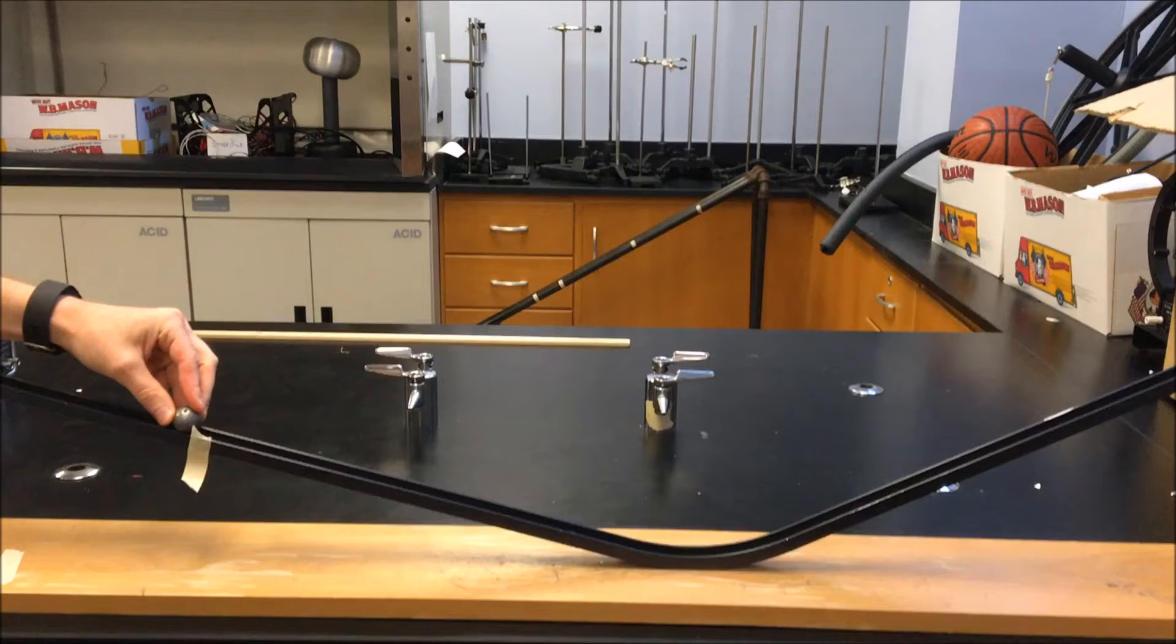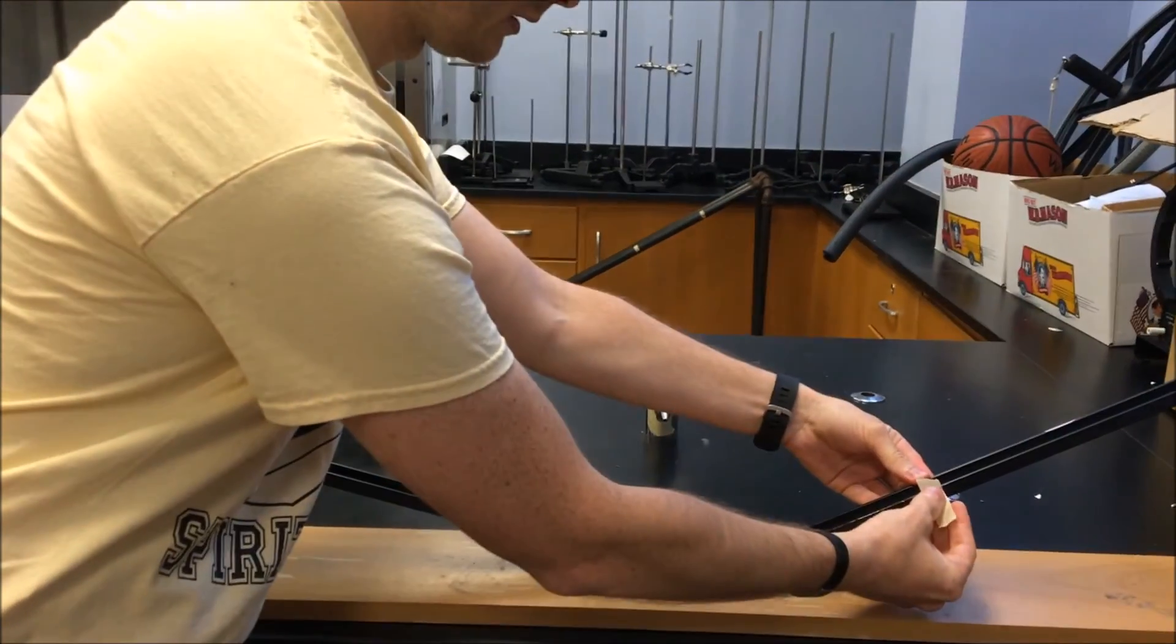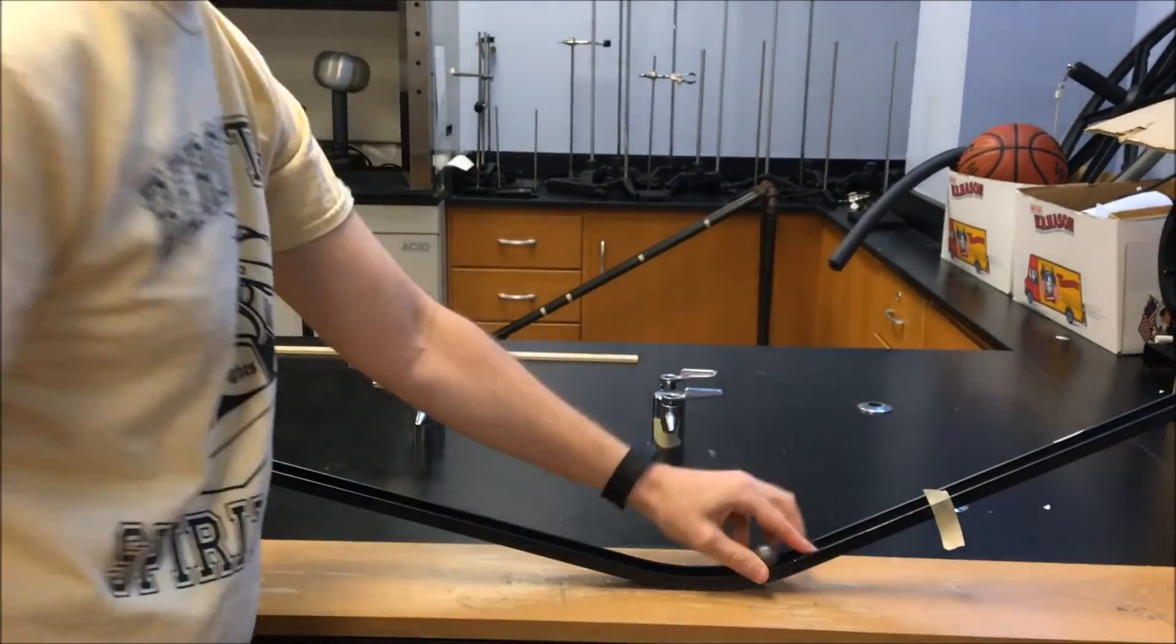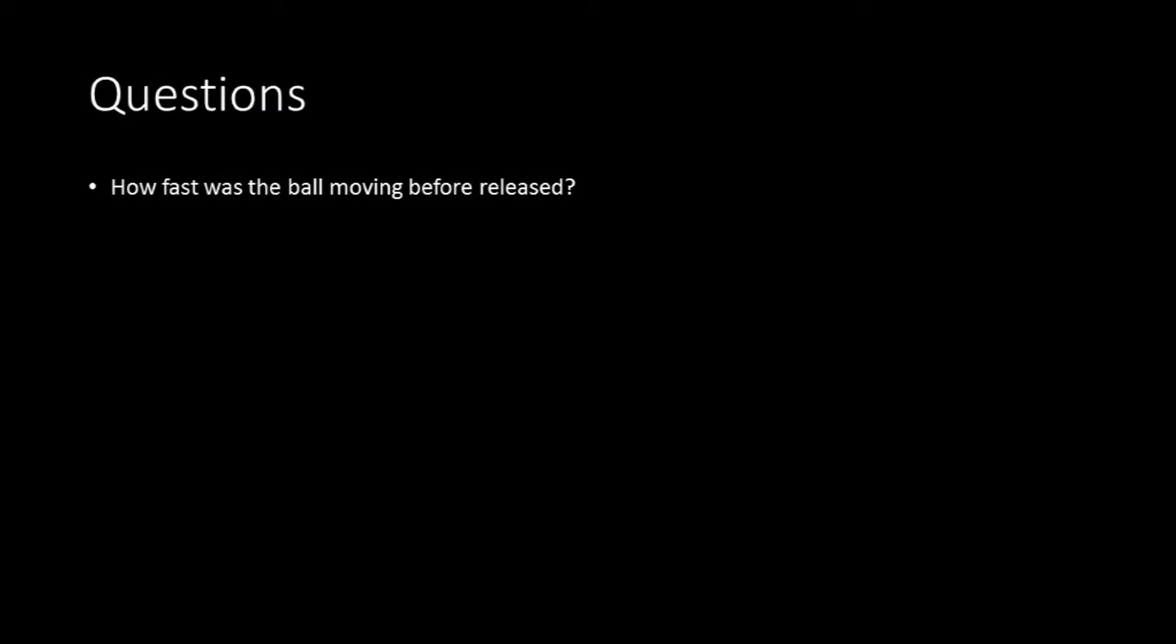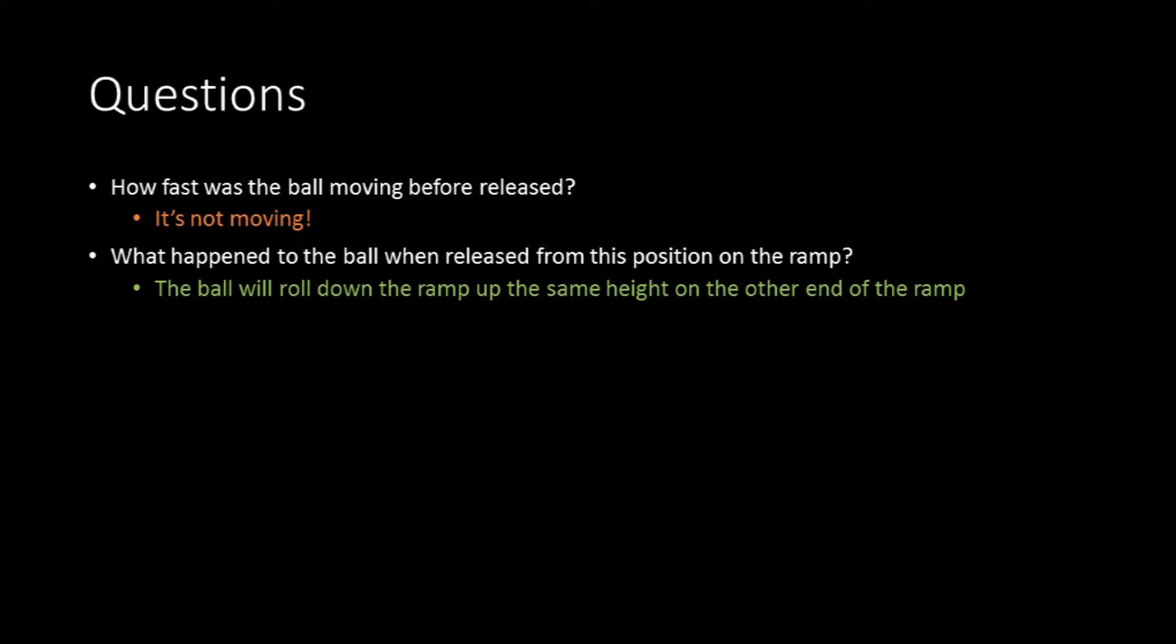Trial 1 deals with both sides of the U-Ramp equally inclinated. So how fast was the ball before it was released? It was not moving, so the velocity is zero. What happened to the ball when it was released from rest? The ball rolled down the ramp and up to the same height it was released.